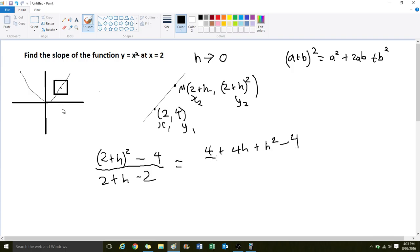Take away 4. And that is divided by, now 2 take 2 can cancel, so we just have h on the bottom. And up here as well, we can have the 4 and the minus 4 cancel.